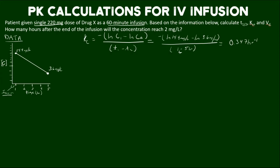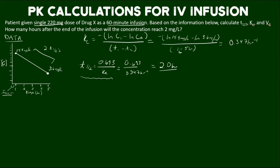That unit works out because the top becomes unitless and we have hours on the bottom, so it's hour to the negative 1. Now that we have the elimination rate constant, we can calculate the half-life. You may notice that 14.4 divided by 2 twice equals 3.6, meaning it's 2 half-lives. The time passage from 1 to 5 hours is 4 hours total, so the half-life is 2 hours. We could figure this out from the graph and then use it to calculate KE by rearranging the half-life equation.